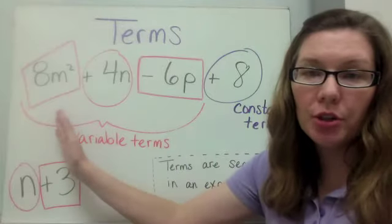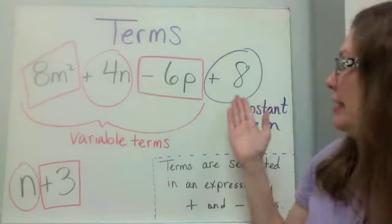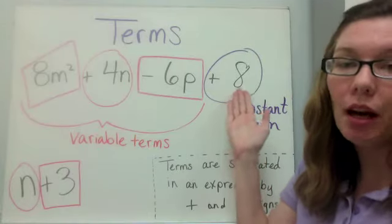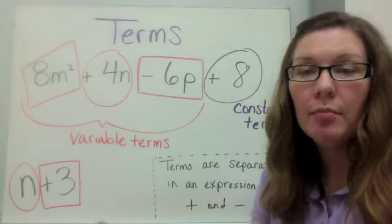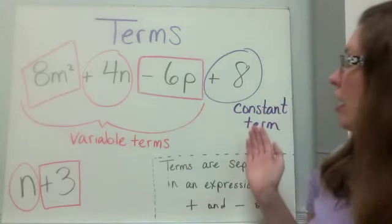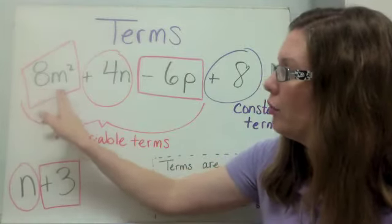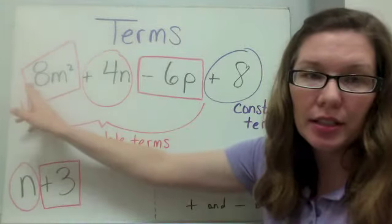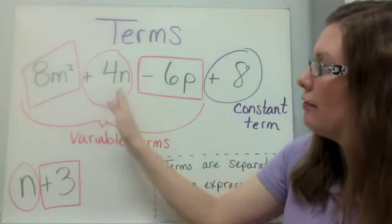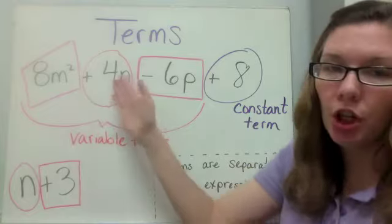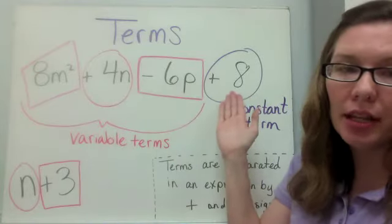We know these three are variable terms because these are the terms with variables in them, and then since this is just a number, it's going to be constant. It will not change. It does not have a variable. It won't vary because of that variable, so we call it constant. This term, 8m squared, we can see that it is positive because there is no sign out front, and if there's no sign, it's understood to be positive. This 4n is a positive term. This 6p is a negative term, and this constant is a positive term.